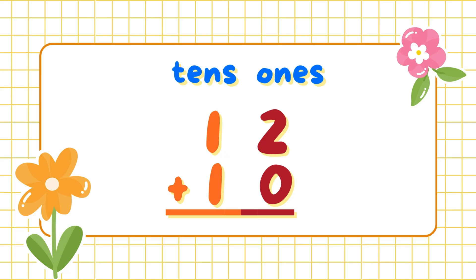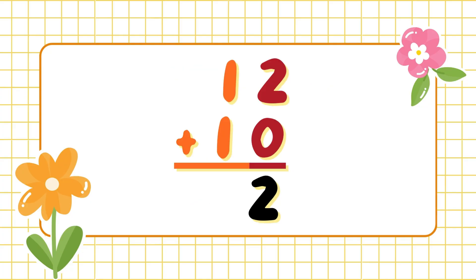Now let's start with twelve plus ten. Where do we add first? The ones digits — the two and the zero. So what are the tens digits? The one and the one. Those are the tens digits. Now let's add two plus zero. Everybody knows that makes two.